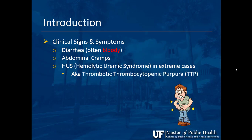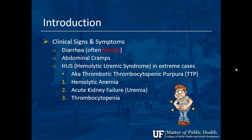HUS — hemolytic uremic syndrome — is a complication in extreme cases, also known as thrombotic thrombocytopenic purpura. It is a triad: hemolytic anemia, where red blood cells lyse and you lose hemoglobin; acute kidney failure, where you find elevated urea and creatinine ratios; and thrombocytopenia, where your platelet numbers decrease. This can become pretty fatal if not treated early.